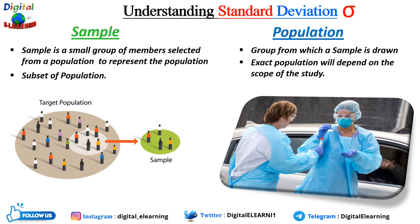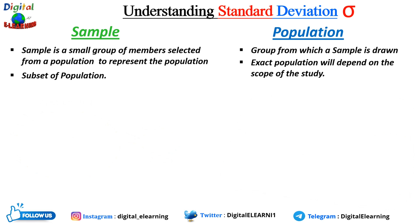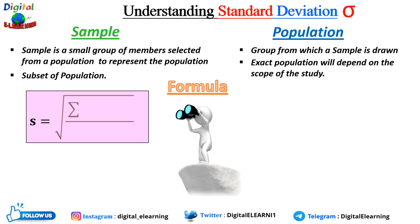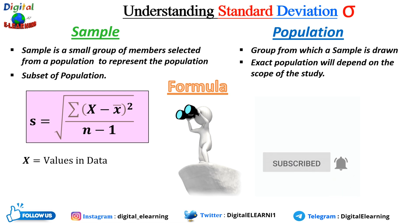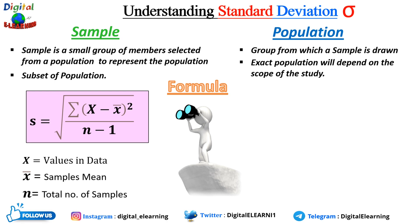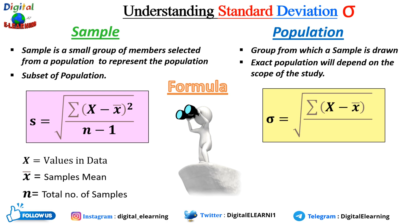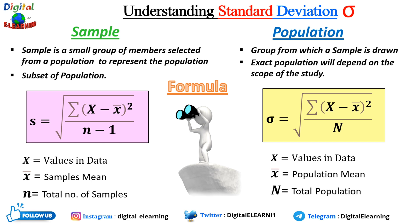Coming back to standard deviation — what is the difference between the formula for sample and population? For sample, it is given by the square root of the summation of (x minus x-bar) squared, divided by n minus 1, where x is the individual value, x-bar is the sample mean, and n denotes the number of samples. For population, it is the square root of the summation of (x minus x-bar) squared, divided by n, where x denotes individual values, x-bar denotes the population mean, and n denotes the total population.